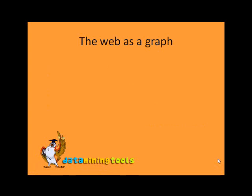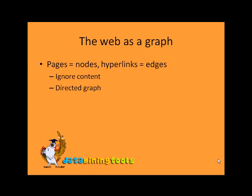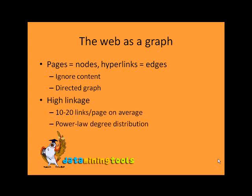We take the web as a graph, with pages as nodes and hyperlinks as edges, ignoring the content. We use a directed graph. In terms of linkage, we use 10 to 20 links per page on average, and we use power law degree distribution.